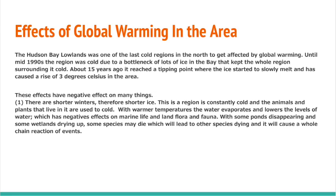Global warming has negative effects on many things. First, there are shorter winters and therefore shorter ice. This is bad because the Hudson Bay lowlands is a region that is constantly cold and the animals and plants that live in it are used to the cold. Second, with warmer temperatures, the water evaporates and lowers the levels of water, which has negative effects on marine life, land, flora, and fauna. Third, with some ponds disappearing and some wetlands drying up, some species may die, which will lead to other species dying and cause a whole chain reaction of events.